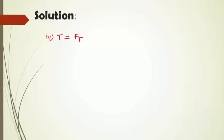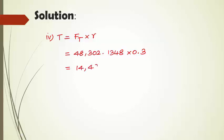In the fourth subdivision, it is asked to calculate the turning moment acting on the crankshaft. That is the tangential force acting on the crankshaft into the crank radius: 48,302.1348 into 0.3 meter. So the turning moment T is 14,490.6404 newton meter. This is the answer for the fourth subdivision.